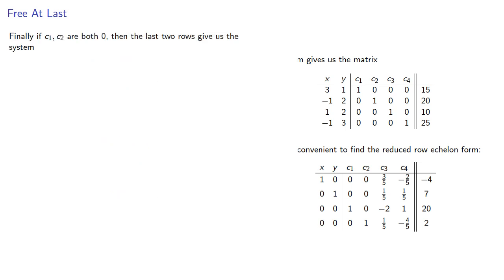Finally, if c1 and c2 are both zero, then the last two rows give us the system, whose solution is, so the corresponding xy will fail both the third and fourth inequalities.